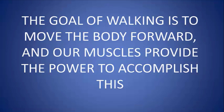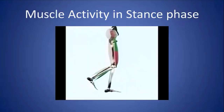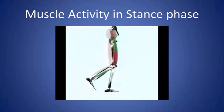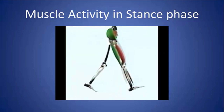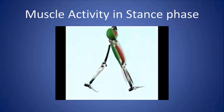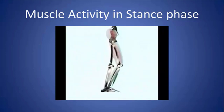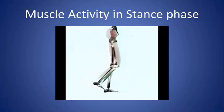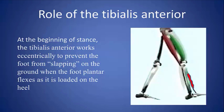The goal of walking is to move the body forward, and our muscles provide the power to accomplish this. This wonderful animation from the book by the Gillette Group shows the muscle activity as we progress through the gait cycle. The muscles working concentrically — providing power and contracting as they fire — are colored green, whereas the muscles providing control, being stretched as they fire and working eccentrically, are colored red. Everything works in a very finely orchestrated fashion.